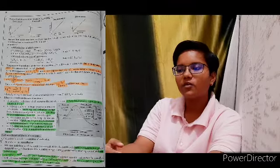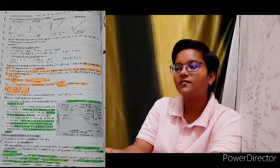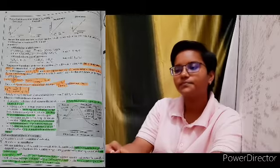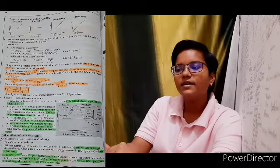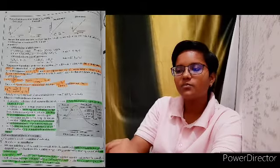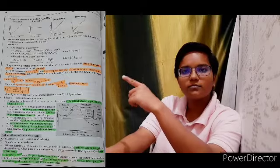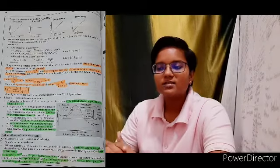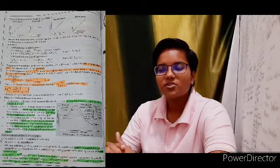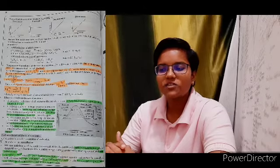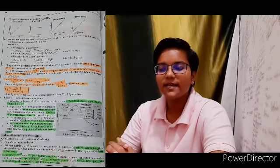Effect of a catalyst on the rate of reaction: A catalyst is a substance which increases the rate of a reaction without itself undergoing any permanent chemical change. Catalysts provide an alternate pathway or reaction mechanism by reducing the activation energy, lowering the potential energy barrier. A catalyst does not alter Gibbs energy ΔG or ΔH of the reaction. It catalyzes spontaneous reactions but does not catalyze non-spontaneous reactions, and does not change the equilibrium constant — rather it helps in attaining equilibrium faster.